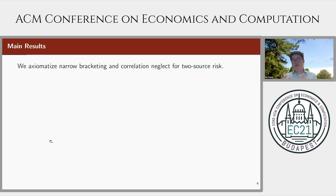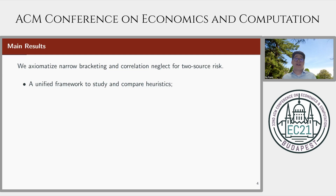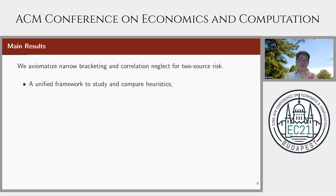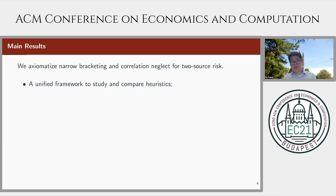You may ask: why do we bother to adopt the axiomatic approach? First, it provides a unified framework to study and compare heuristics. For instance, our representation theorem allows for either narrow bracketing only, correlation neglect only, or both of them, or neither of them — the rational benchmark. Then you can attribute the differences in behavior of different models exactly to these heuristics and nothing else.